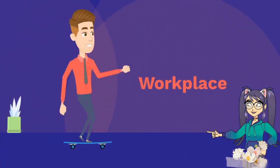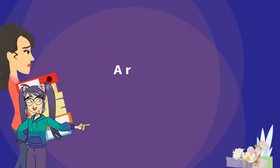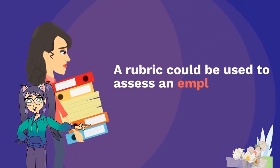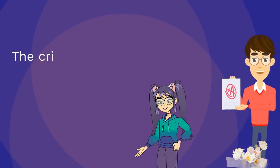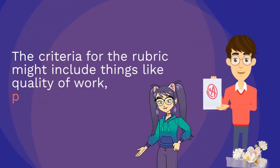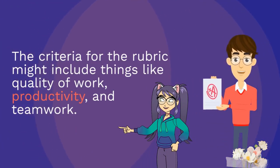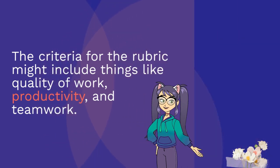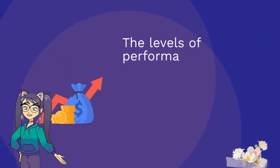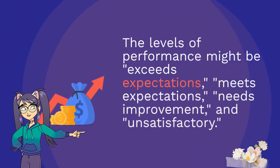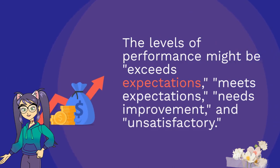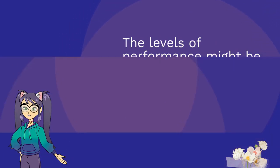Rubrics can be used in the workplace. For example, a rubric could be used to assess an employee's performance. The criteria for the rubric might include things like quality of work, productivity, and teamwork. The levels of performance might be exceeds expectations, meets expectations, needs improvement, and unsatisfactory.